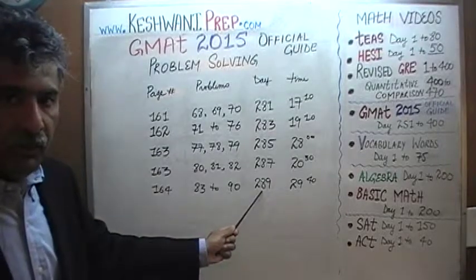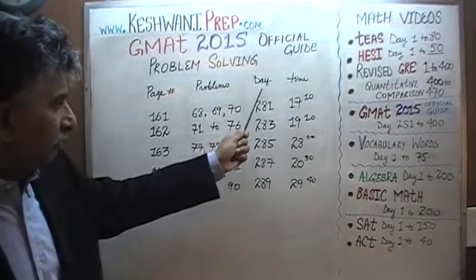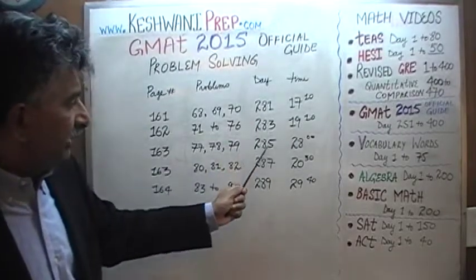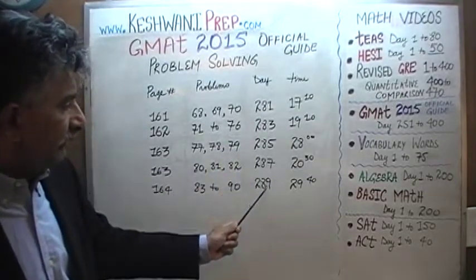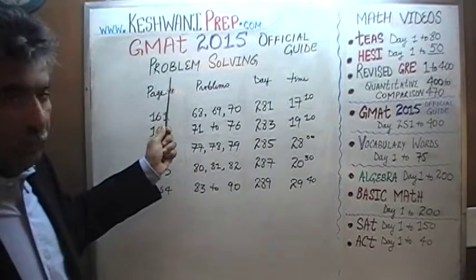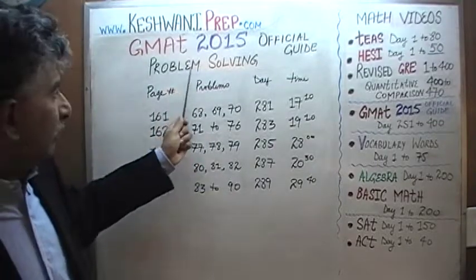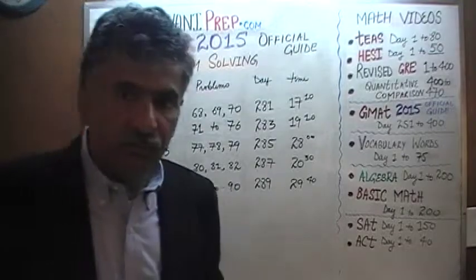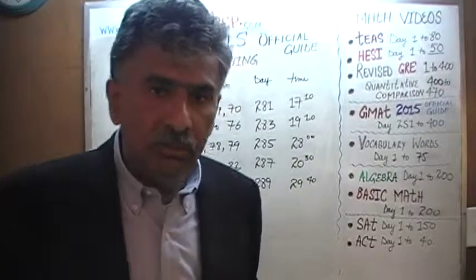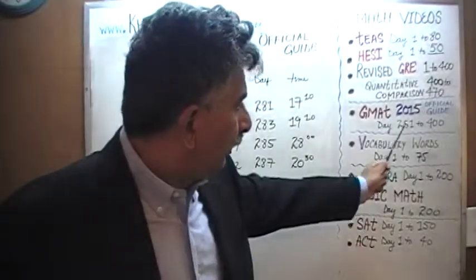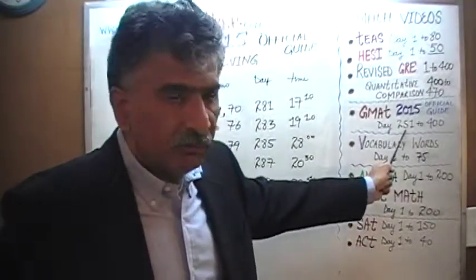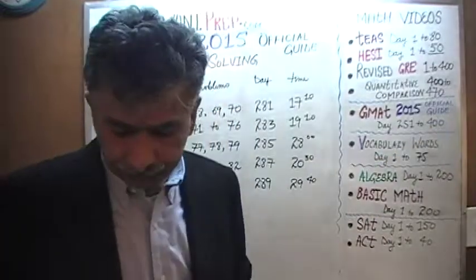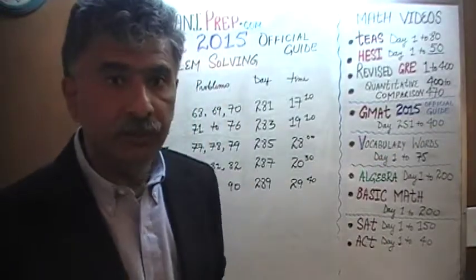You will find the solutions to all the problem solving questions on the odd numbers, and the solutions to all the data sufficiency questions on even numbers, beginning with 252 all the way to 400. Thank you.